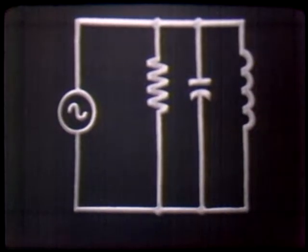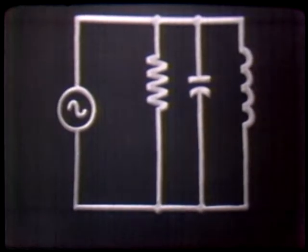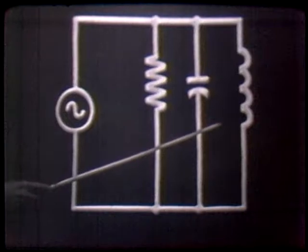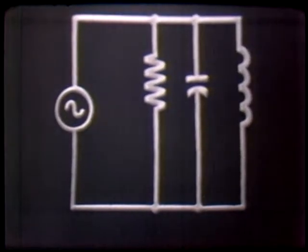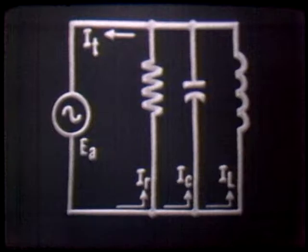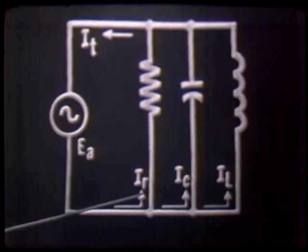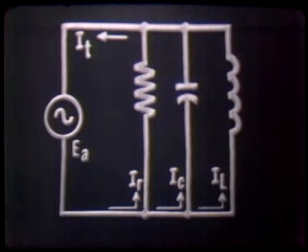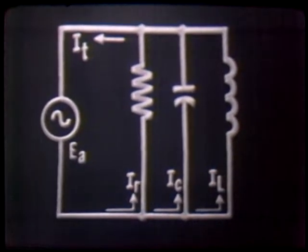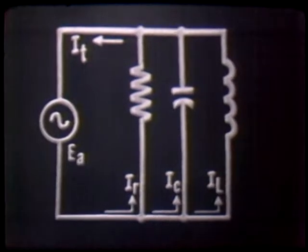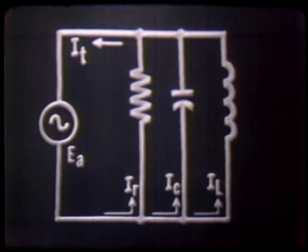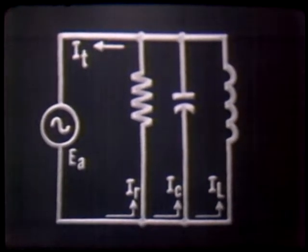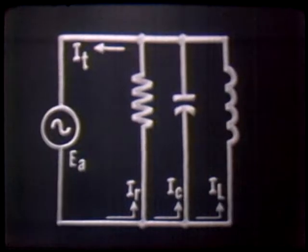Let's closely look at our circuit once again. With the applied voltage felt across each component — R, C, and L — we have three individual branch currents: IR, IC, and IL. These three branch currents combine to form our total current, IT. The total current is not the arithmetic sum of the branch currents, but is the vector sum.